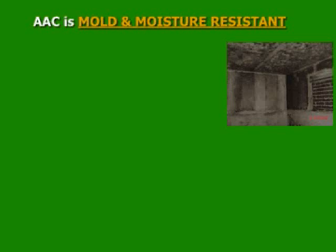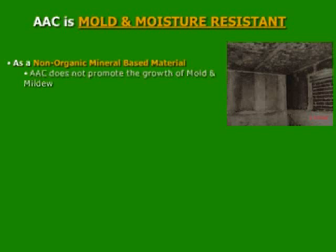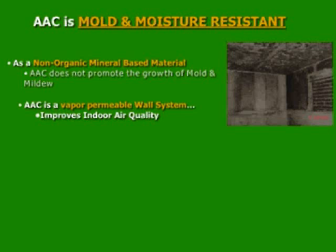Moisture in the room, which normally occurs, cannot escape in concrete buildings. And as soon as the temperatures cool down to the dew point, either naturally or with an HVAC unit, the moisture molecules become water droplets and start feeding organic items, like the paper on the drywall. AAC is a non-organic mineral-based material and does not promote the growth of mold and mildew.